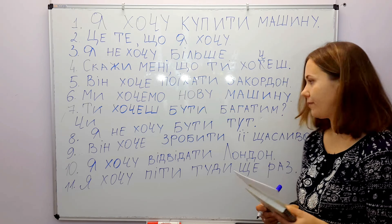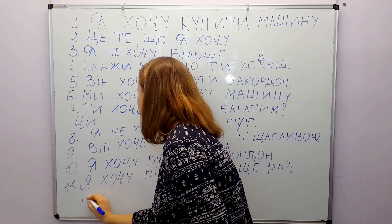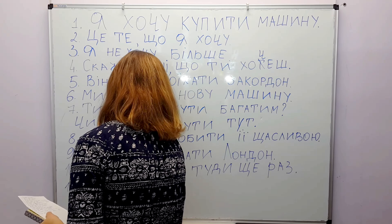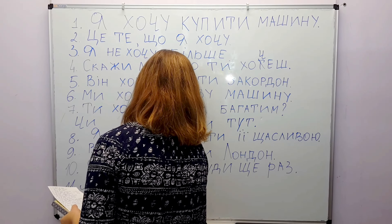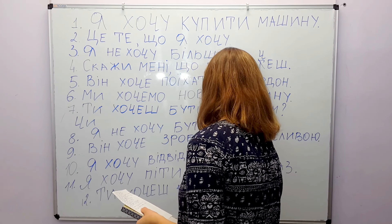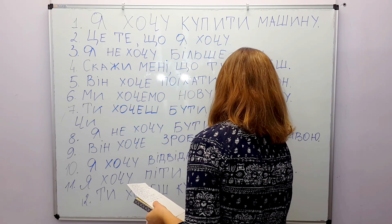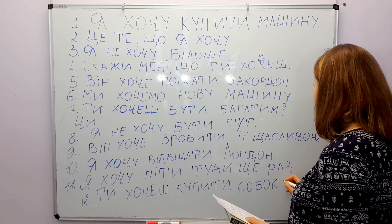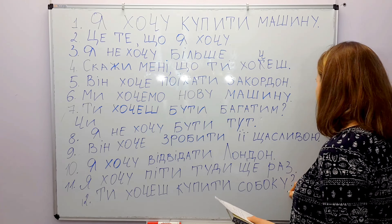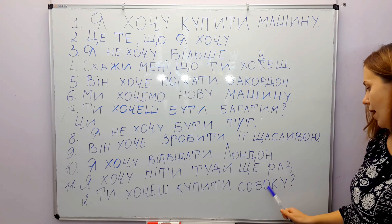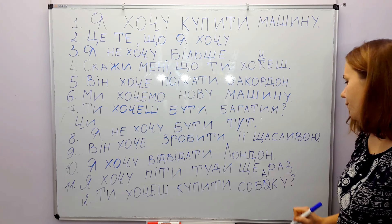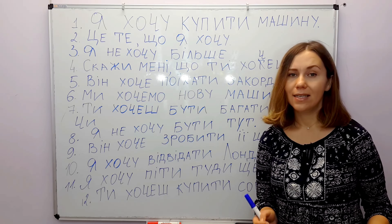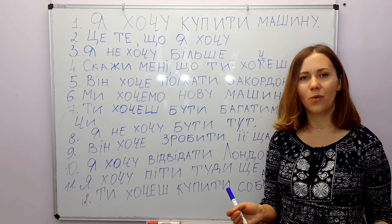Do you want to buy a dog? Ти хочеш купити собаку? Собаку is the accusative case — собака in the nominative, but собаку in the accusative case. Ти хочеш купити собаку? Со-ба-ку. Так, я хочу — yes, I want. Ні, не хочу — no, I don't want.